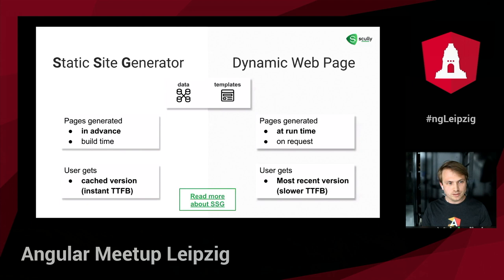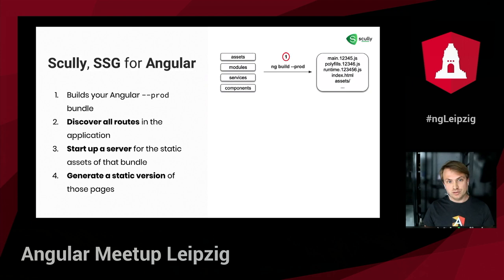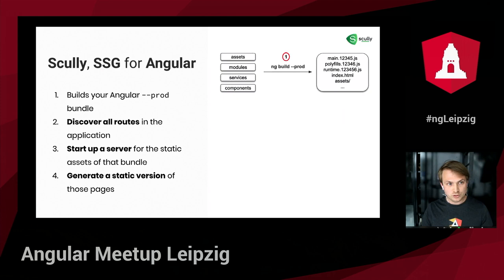You can find a lot about static site generation on the internet — I've linked a very good article on the Netlify blog. So, Scully is the static site generator for Angular. How does it work? First we need to build our Angular application, preferably using the production flag for an optimized build. We get a lot of output: the bundles, static assets, and the index.html.